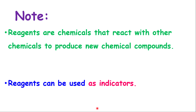Before I get into this specific test, I wanted to note that we're going to use some substances known as reagents. Reagents are chemicals that react with other chemicals to produce new compounds. The reagents we're going to use in this experimental lesson are used as indicators — chemicals that when they react with other chemicals may produce a color change.